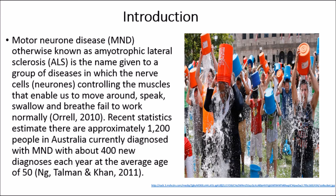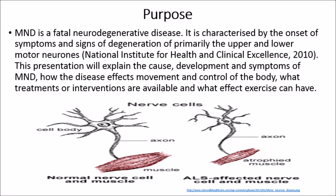Recent statistics estimate there are approximately 1200 people in Australia currently diagnosed with MND, with about 400 new diagnoses each year at the average age of 50. MND is a fatal neurodegenerative disease, characterised by the onset of symptoms and signs of degeneration of primarily the upper and lower motor neurons.